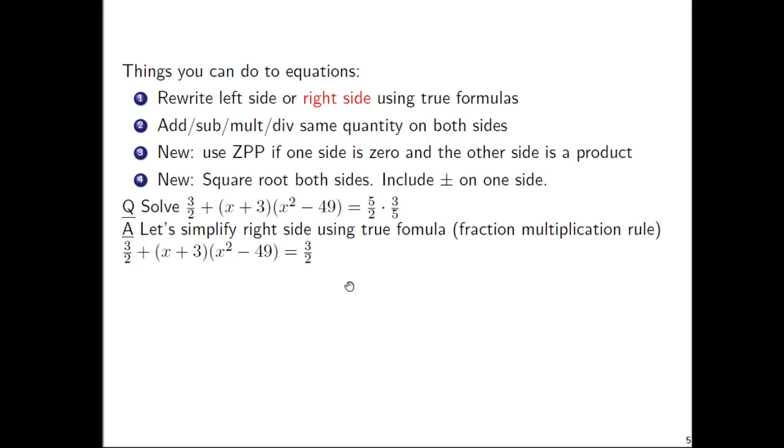Now I'd like to do the second kind of step, which is add, subtract, multiply, or divide the same thing on both sides. And I'd like to subtract 3/2 on both sides. If you subtract 3/2 on both sides, look, there's a 3/2 on the right side. 3/2 - 3/2 is zero. On the left side, there's a 3/2 plus whatever. So subtracting 3/2 on both sides, that's gone from that side.